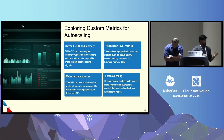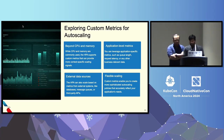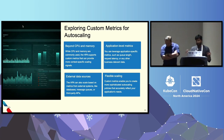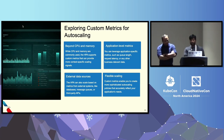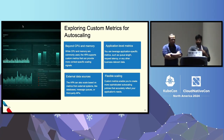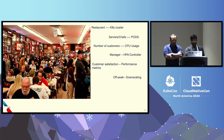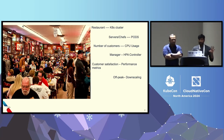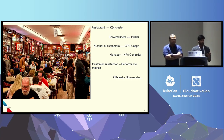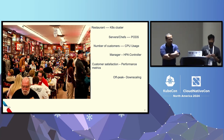Let's make an analogy. Think about a restaurant as a cluster, chefs as pods, number of customers as CPU usage, the manager as the HPA controller, and customer satisfaction as the performance metric we're scaling on. If the restaurant operates for 10 customers with one server, for 50 customers there are five servers — that's like HPA scaling based on CPU. But with custom metrics, the metrics might be customer reservations or customer feedback, and based on event scheduling you estimate customers ahead of time.